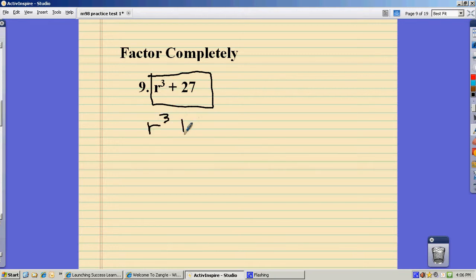So let me think about this. R cubed, 27 is 3 cubed, so it sure is sum of two cubes.